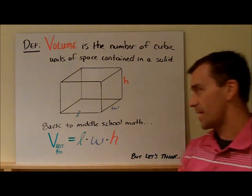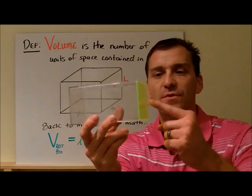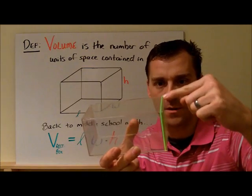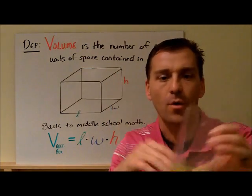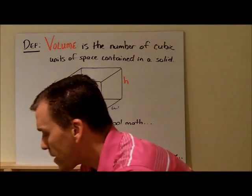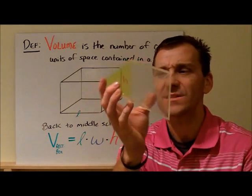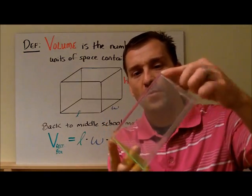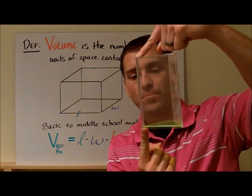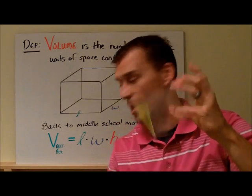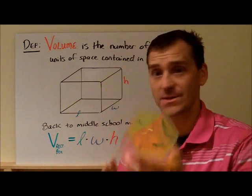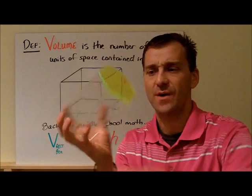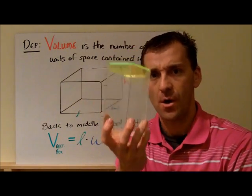If we take a prism, there's a length, width, and height. But what about this triangular prism? What's the length, what's the width, what's the height? There isn't really a distinctive length and width, nor in this hexagonal prism. There's certainly a height from base to base, but there's not a length or width.